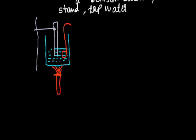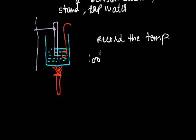Below the beaker, place a Bunsen burner and a stirrer for continuous mixing. Start the burner and record the temperature. You will notice that the temperature of water rises until it starts boiling. The temperature of boiling water is 100 degrees centigrade, or 373 Kelvin. If we continue heating, the water changes into steam but the temperature remains constant at 100 degrees centigrade.